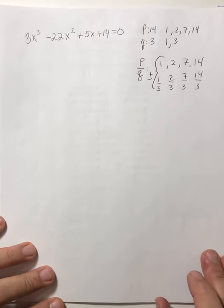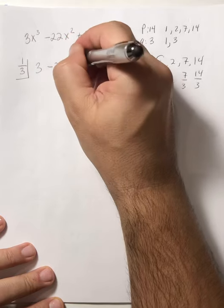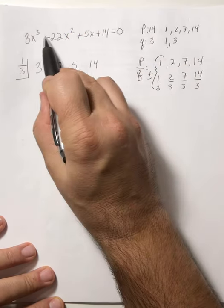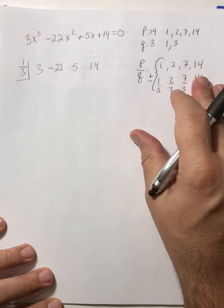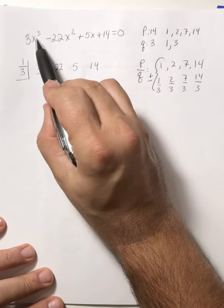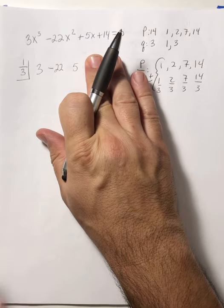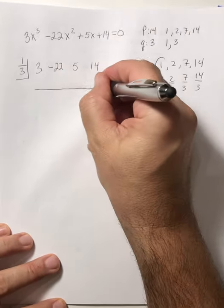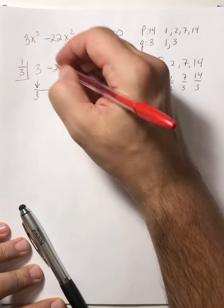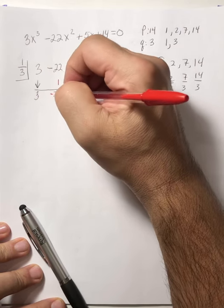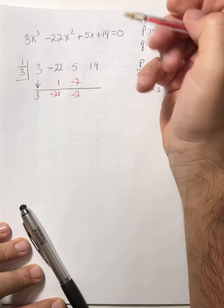This is a third-degree equation, so I only need synthetic division to work once — it breaks it down to a second degree that we can factor. Are we missing any terms? No, so no placeholders needed. Fractions are friends. Let's try 1 third first: drop the lead; 3 goes into 3 once, times 1 is 1; I add to get negative 21; 3 goes into 21 is 7, so negative 7; 5 minus 7 is negative 2. Does 3 go into negative 2? No. So 1 third doesn't work.